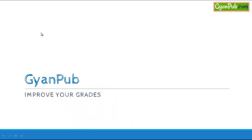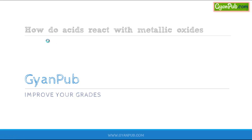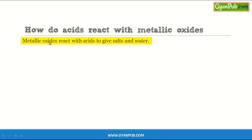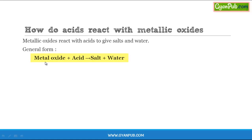Let us discuss the reaction between metal oxides and acids. How do acids react with metallic oxides? When metallic oxides react with acids, the formation of salts and water takes place. Metallic oxides react with acids to give salts and water. The general form of this reaction is: metal oxide + acid → salt + water.